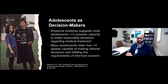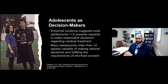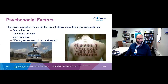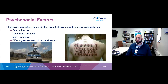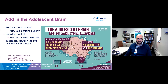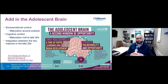Empirical evidence suggests that most adolescents over the age of 13 possess capacity to make reasonable decisions regarding medical treatment. Many adolescents older than 14 appear capable of making rational decisions and fulfilling the requirements of informed consent. However, in practice these abilities do not always seem to be exercised optimally — there's peer influence, adolescents seem to be less future-oriented, more impulsive, with a differing assessment of risk and reward. Around puberty there's maturation of social-emotional control, but the cognitive control part of the brain doesn't mature until the mid-to-late 20s.